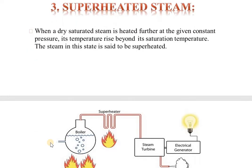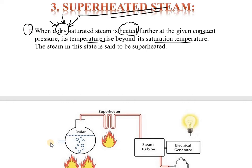The last topic is superheated steam. When dry steam is heated further at a given constant pressure, its temperature rises beyond its saturation temperature. The steam in this state is said to be superheated.